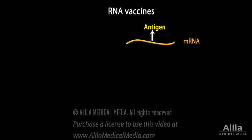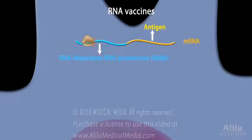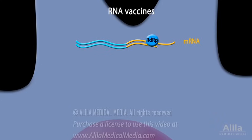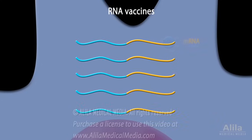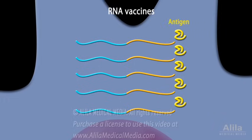Some RNA vaccines also contain additional mRNA coding for an enzyme, which, after being translated in host cells, can generate multiple copies of the antigen-encoding mRNA. This essentially amplifies the production of antigen from a small amount of vaccine, making the vaccine more effective. These are called self-amplifying RNA vaccines.